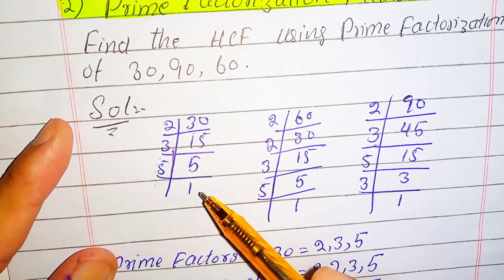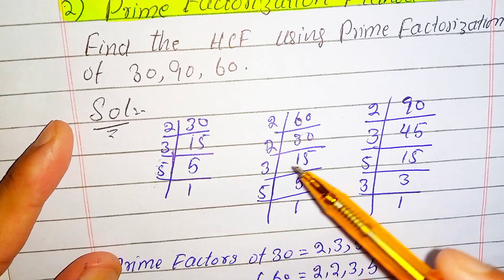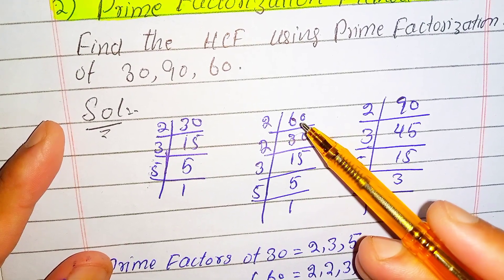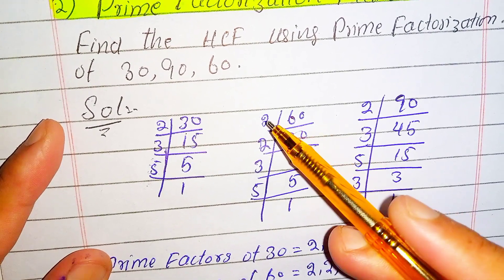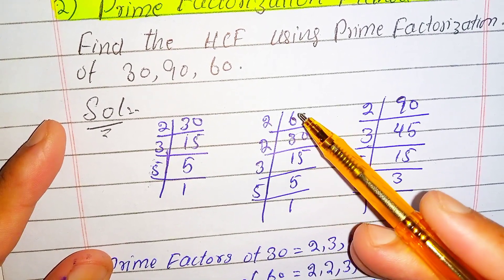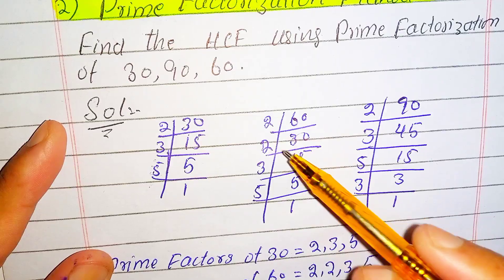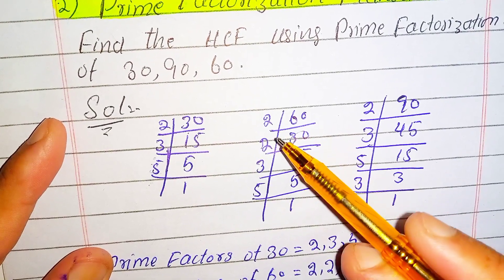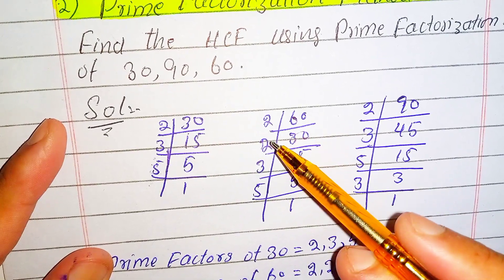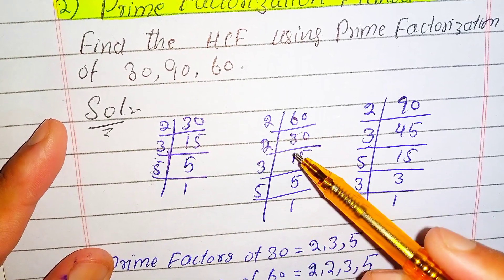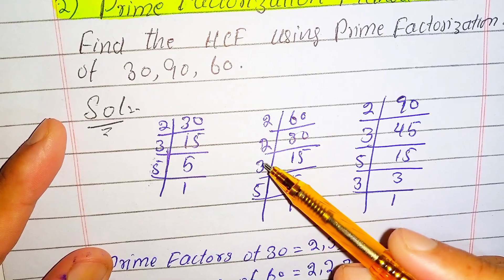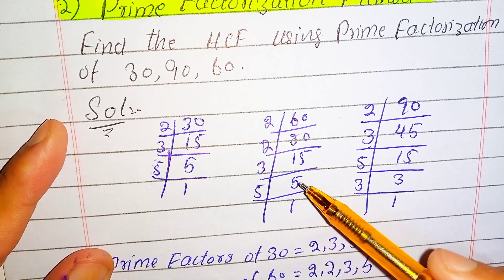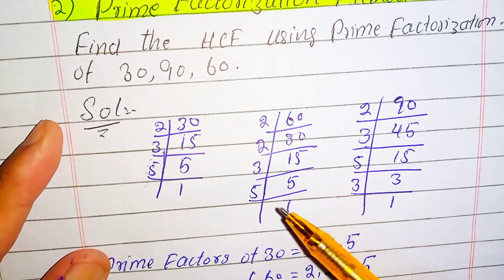Now we do the prime factorization of 60. 2 times 30 is 60, 2 times 15 is 30. Since 15 is not divisible by 2, we take 3 as the divisor. 3 times 5 is 15, and 5 times 1 is 5.